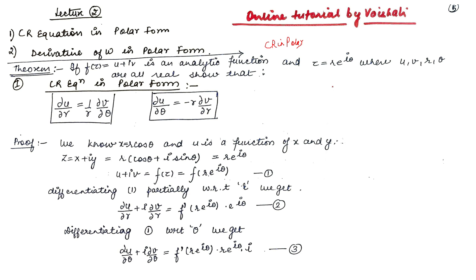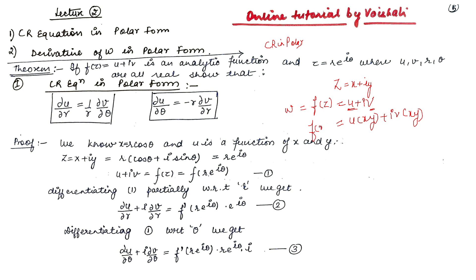Before starting, I want to tell you a few things. The variable Z in complex analysis is represented as X plus IY. The function of Z, which is W = F(Z), is represented as U plus IV, where U and V are both real-valued functions of X and Y. We write U(X,Y) plus I·V(X,Y) equals F(Z) equals W.